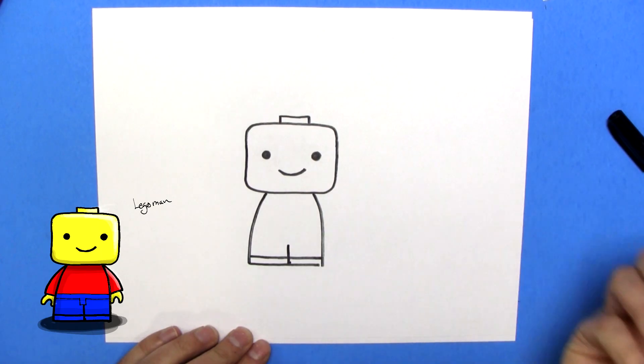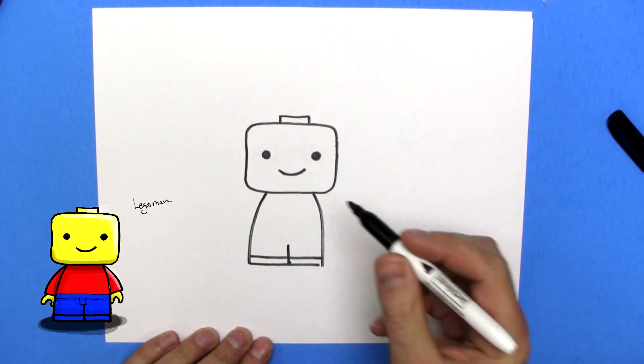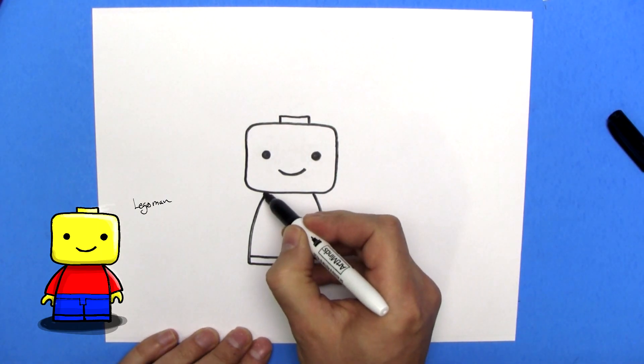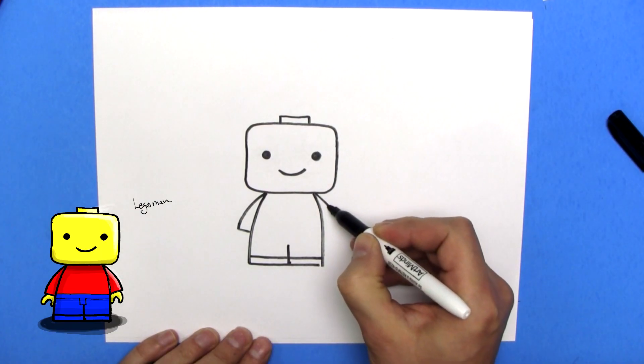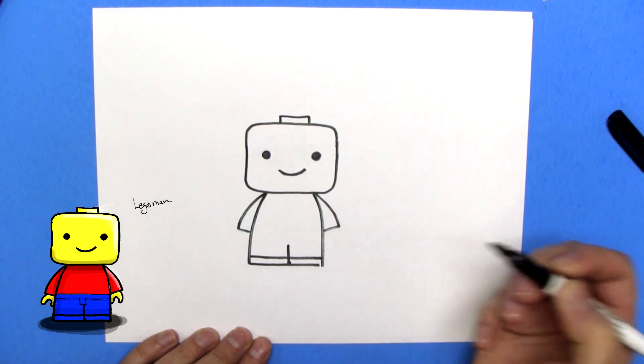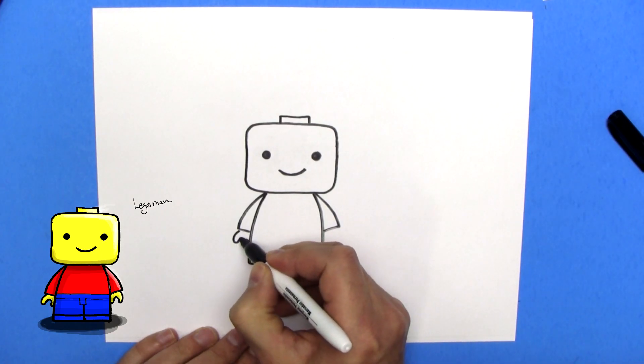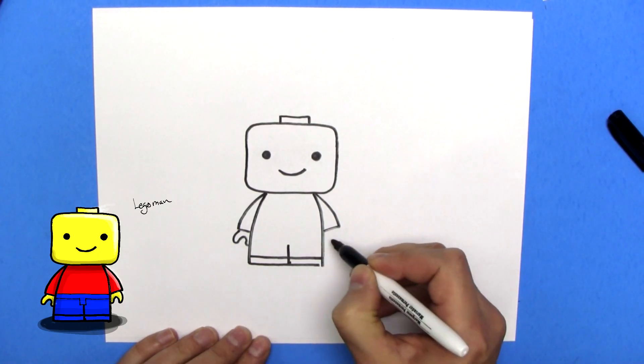We'll draw a line here. That's the Lego Man's legs. We're going to do his arms, like so. And we're going to do his little hands. They just come out like that. Lego hands on a Lego Man.